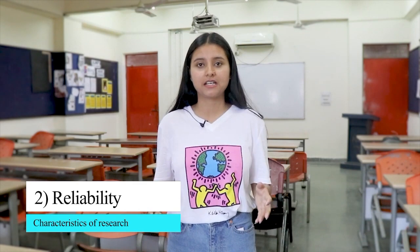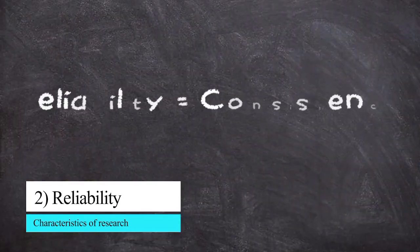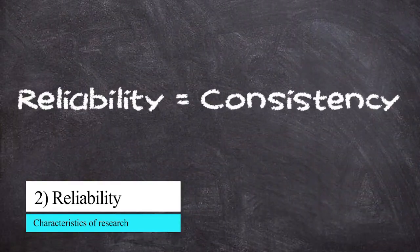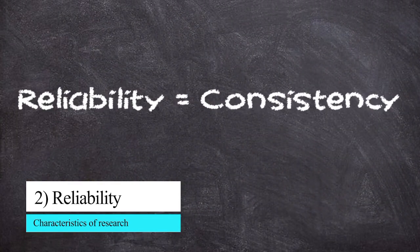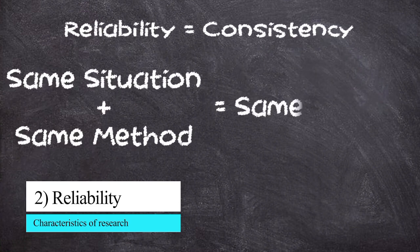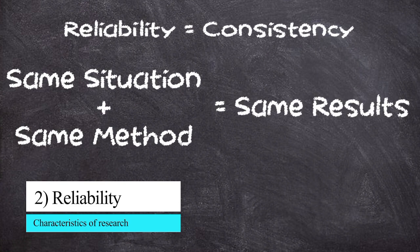The second characteristic of research is reliability. Reliability in research means consistency — it means to what extent your research will produce the same result. With the same situation and same method, your results should be the same.